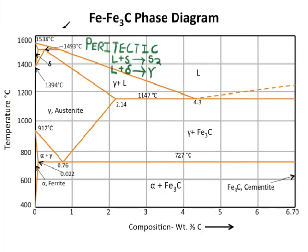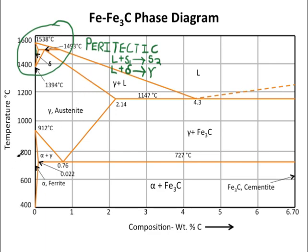The first reaction occurs in the upper corner of the iron-iron carbide phase diagram. It is a peritectic reaction, which means that liquid plus solid one cools into solid two. In this case, liquid and delta cool into gamma. Delta is a high-temperature iron that is body-centered cubic. This reaction is important, but the focus of this screencast will be on the eutectoid reaction.